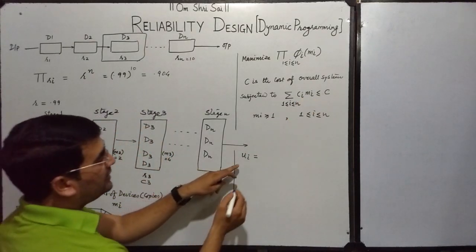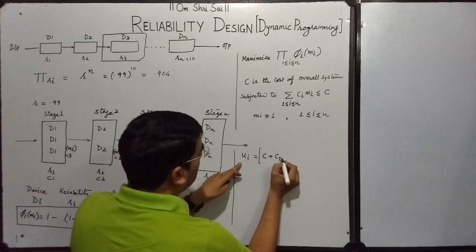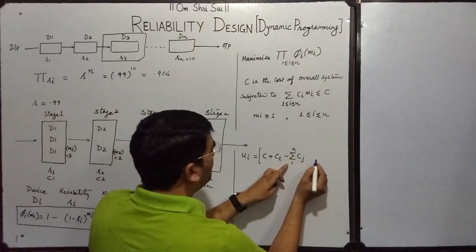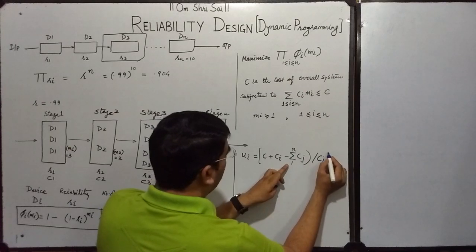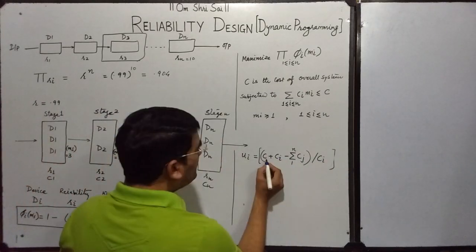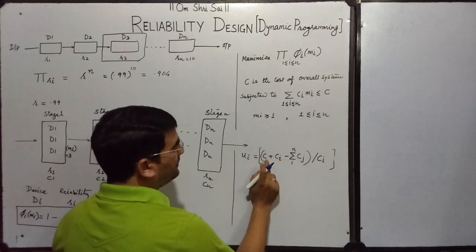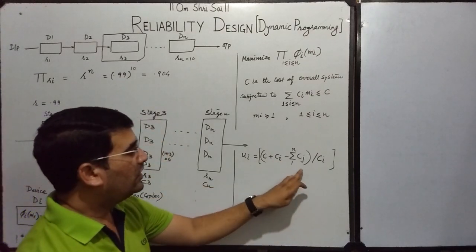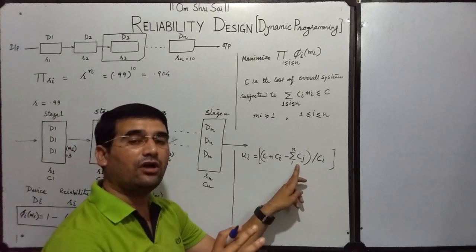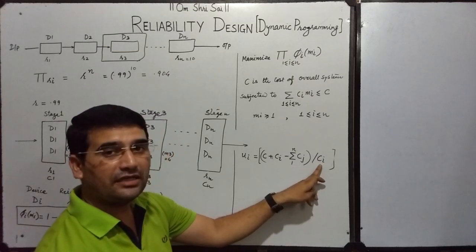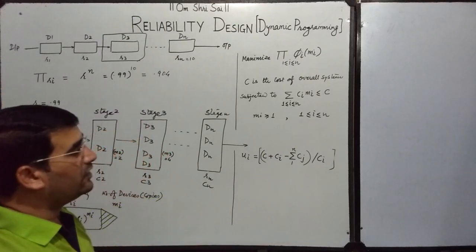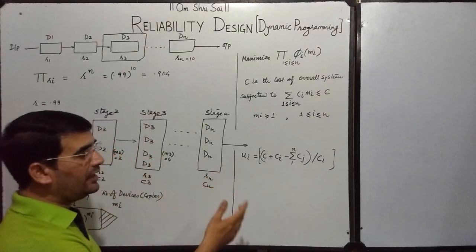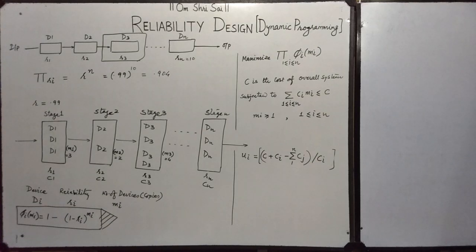The formula for the upper bound is: UI = floor( (C + Ci - sum of Cj for j=1 to n) / Ci ), where C is the limiting cost, Ci is the cost of the ith device, and the sum of Cj is the total cost of all devices. With this formula, we can determine the maximum number of devices that can be used at any given stage. This formula will be used in the calculation part.